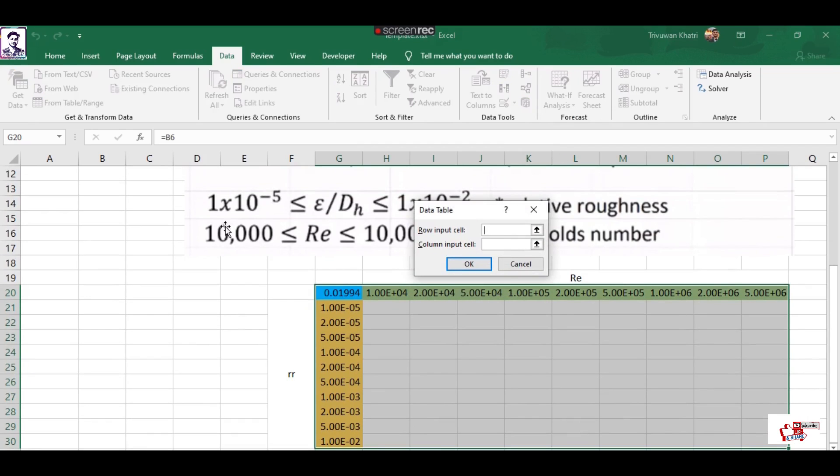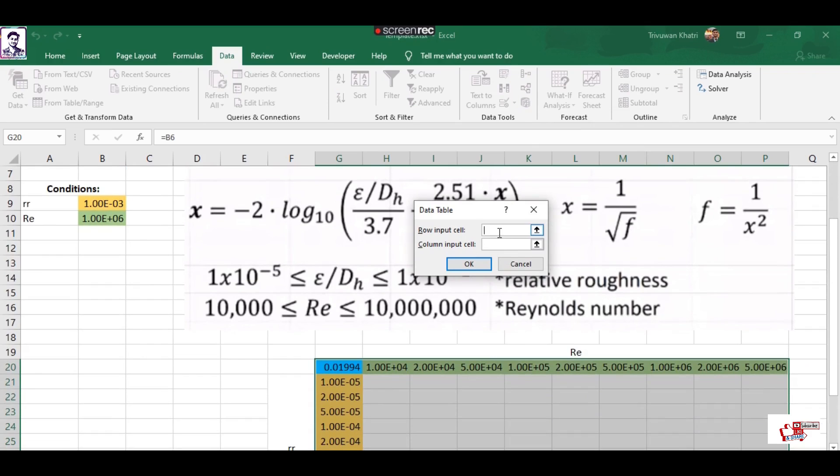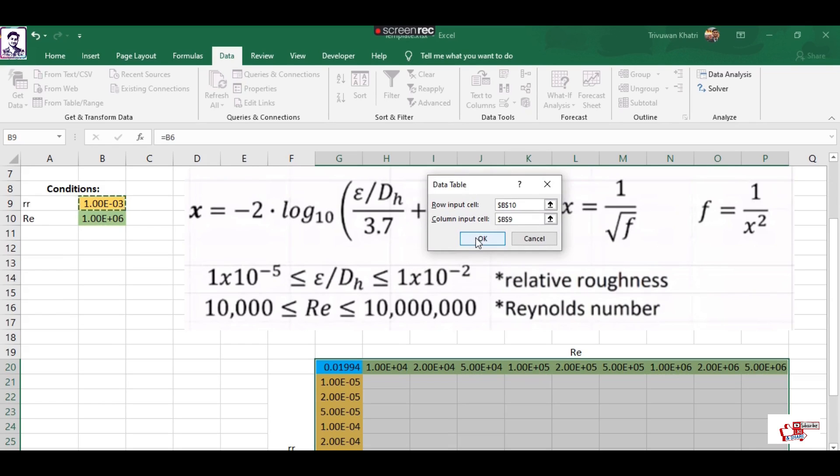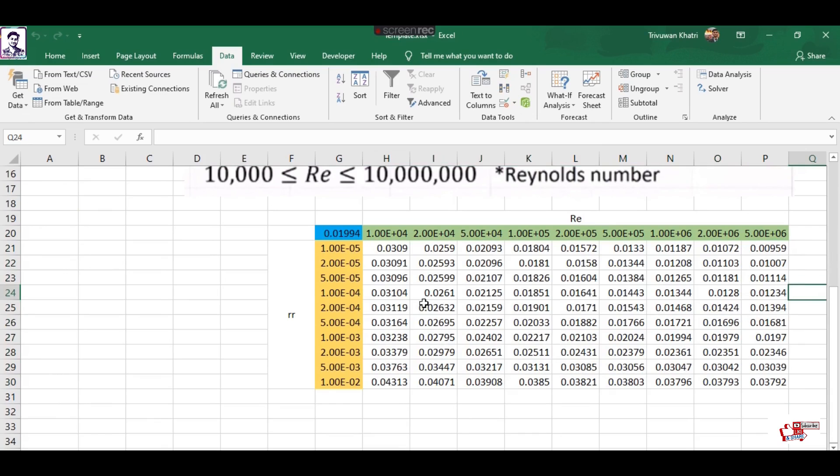Go to Data Table again and assign here the input types as Reynolds number in the row input and relative roughness in the column. If I press OK, then boom - you have your Moody chart parameters here!